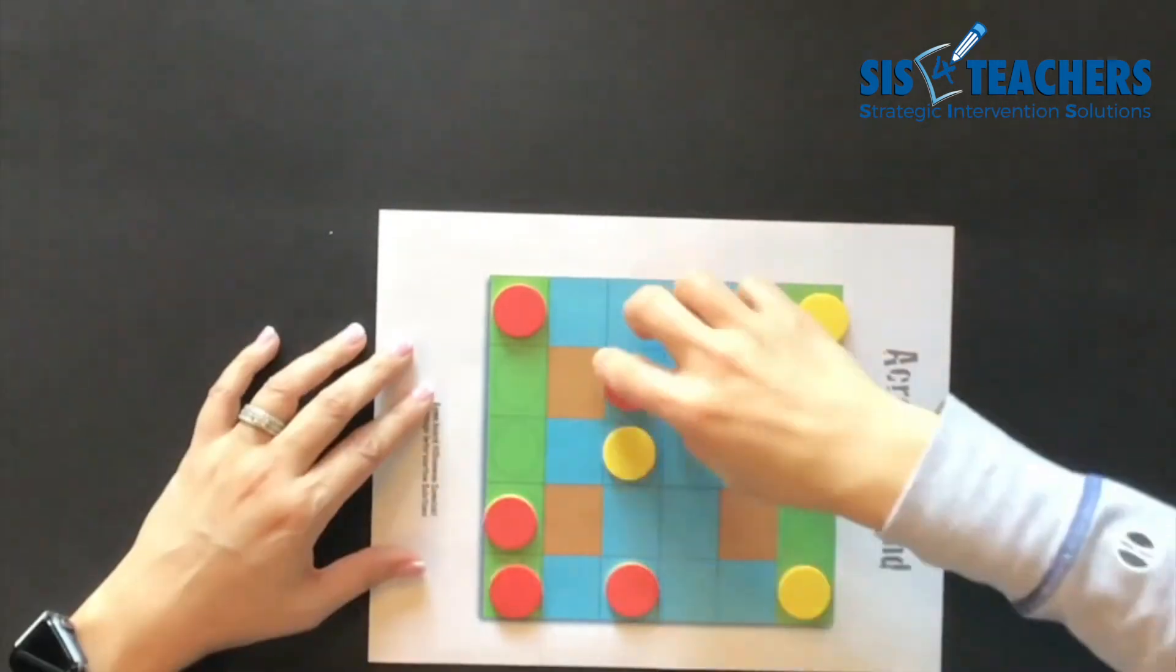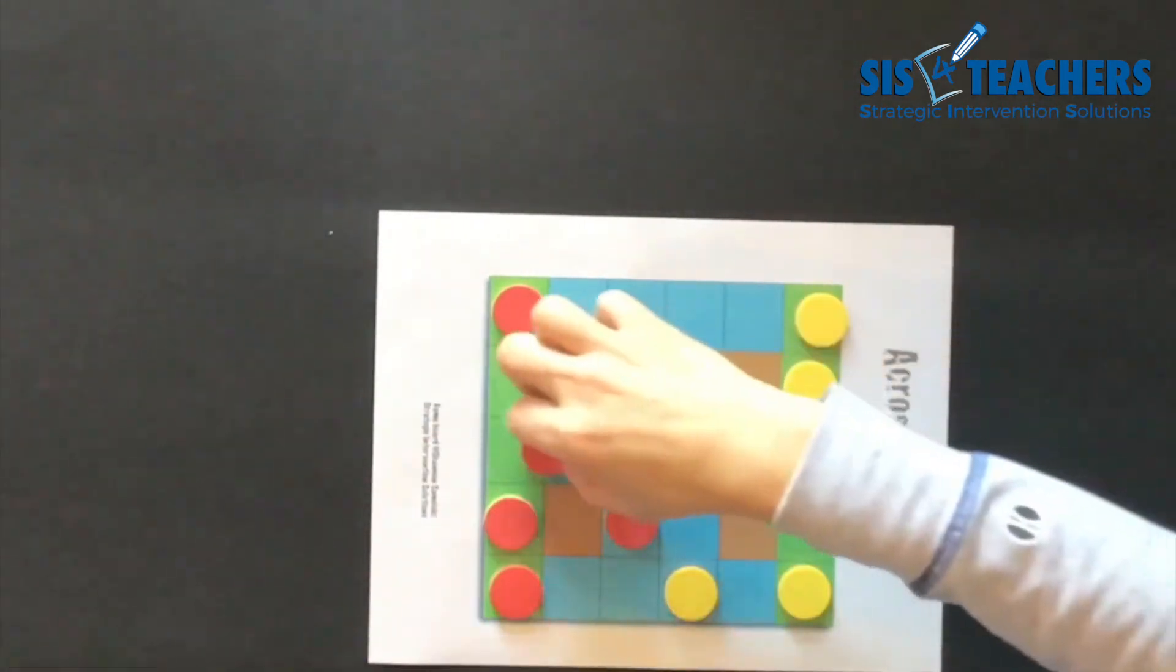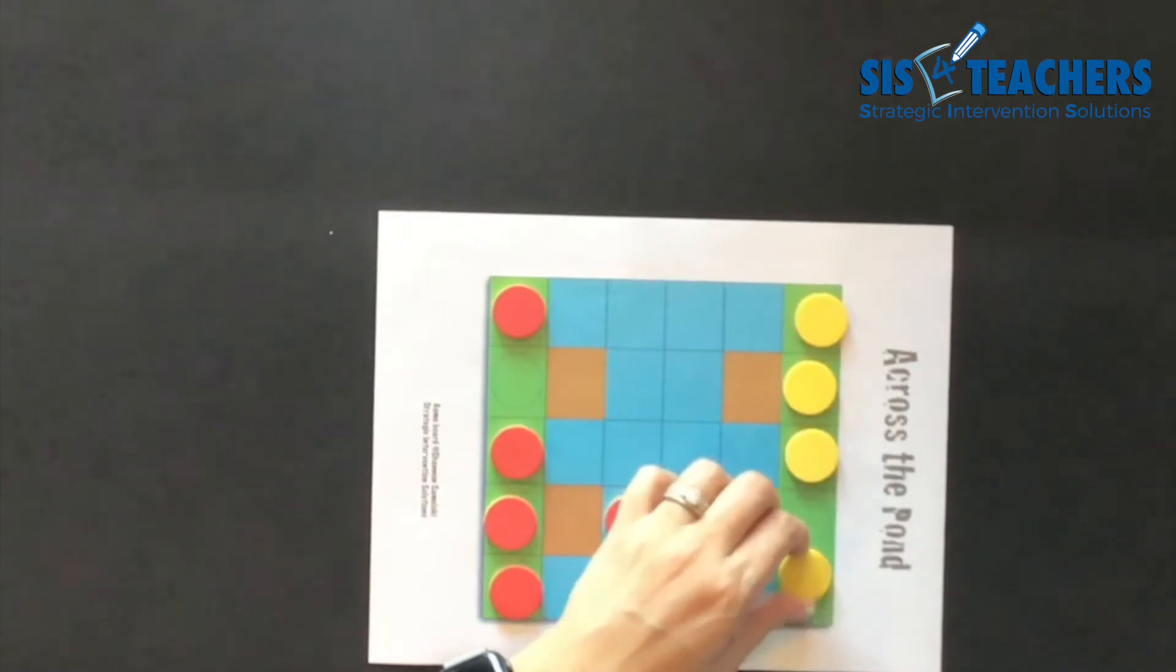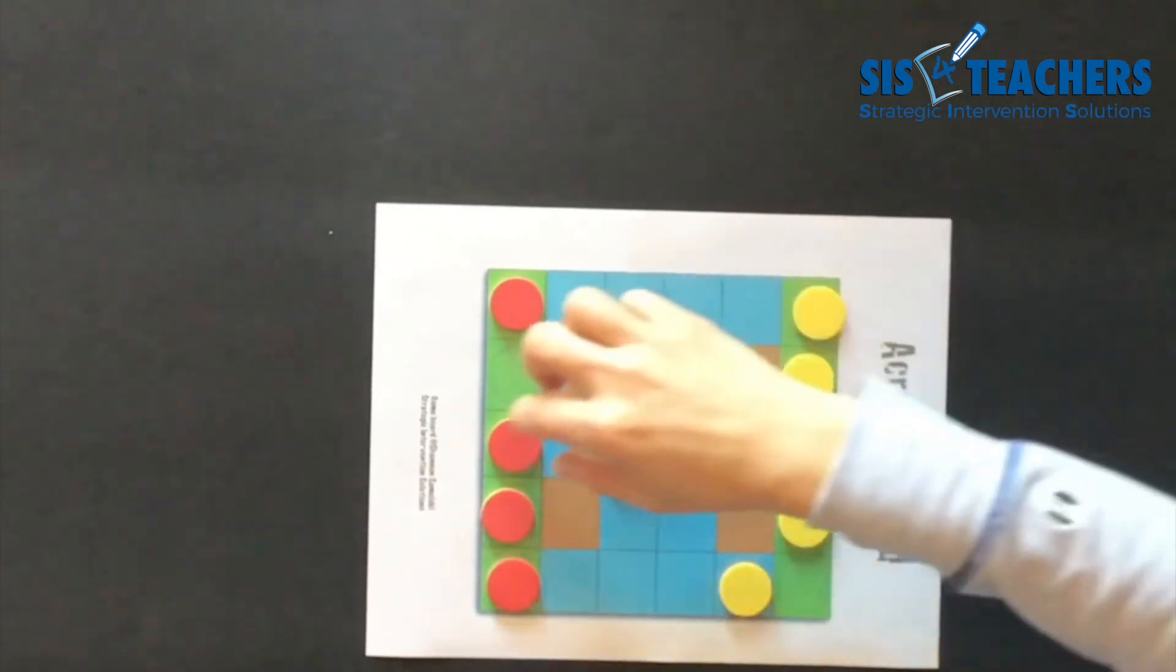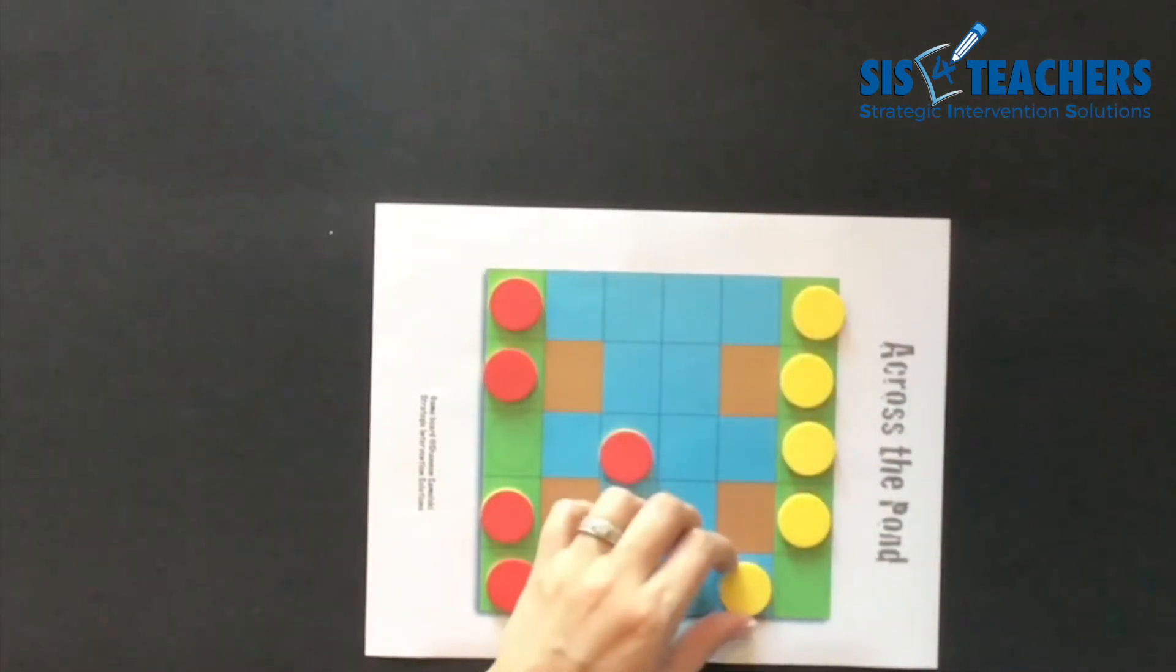It looks like our game is coming close to an end. It's neck and neck where my partner is very close to getting her frogs into my lily pads. However, I have successfully made it across the pond before my partner.